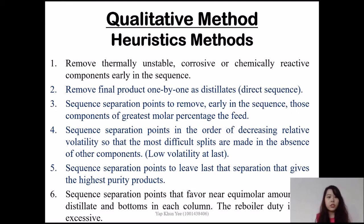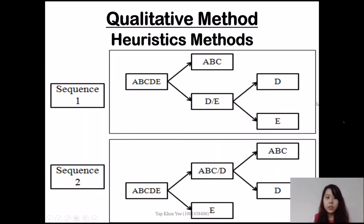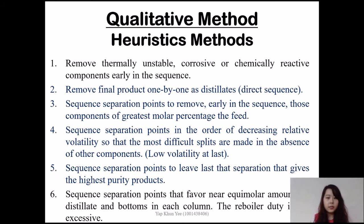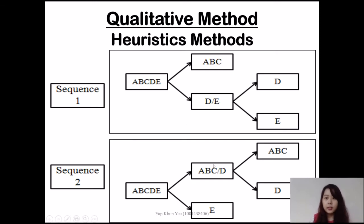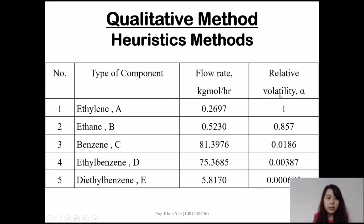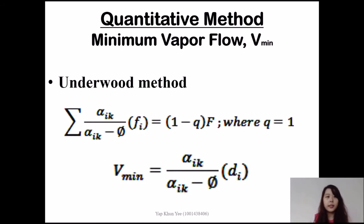As components A and B are negligible, component C is removed followed by D and E at the second column. For heuristic 4, remove the lower volatility last. Based on this table, components D and E have the lowest volatility, hence removed at second column in sequence 1. For heuristic 5, remove the higher purity product last. As component D is the final product ethyl benzene, it should be higher purity and removed at the last. Sequence 1 has been chosen for the heuristic method.